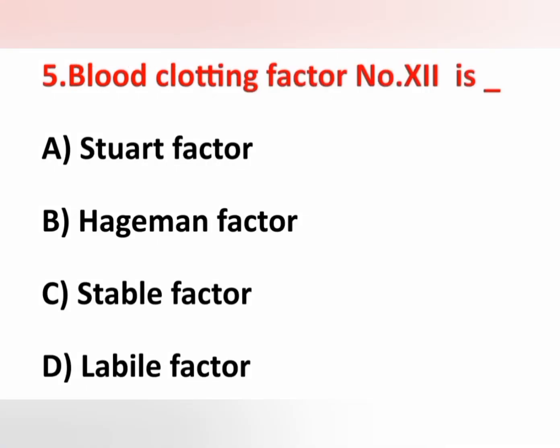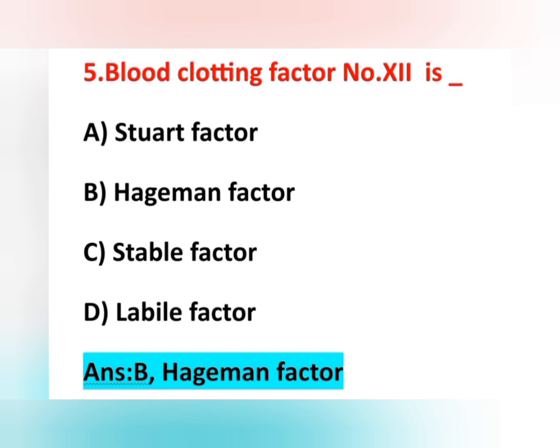Fifth question: blood clotting factor number 12 is? Options are: option A, Stuart factor; option B, Hageman factor; option C, stable factor; option D, labile factor. The correct answer is option B, Hageman factor. There are 13 blood clotting factors in the human body. Factor 1 is fibrinogen, factor 2 is prothrombin, factor 3 is tissue factor or thromboplastin, factor 4 is calcium, factor 5 is labile factor.